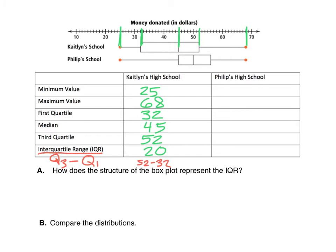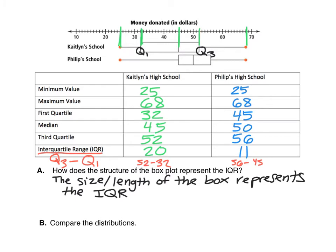Go ahead and fill out those same values for Phillip's high school — pause the video and try this on your own. Here are the values you should have gotten for Phillip's high school. How does the structure of the box represent the interquartile range? Q1 is the left edge of the box and Q3 is the right edge, so the IQR corresponds to the length of the box. Even without calculating, we can tell from the picture that Kaitlyn's school has a higher IQR — the box for Kaitlyn's school is much larger than the box for Phillip's school.